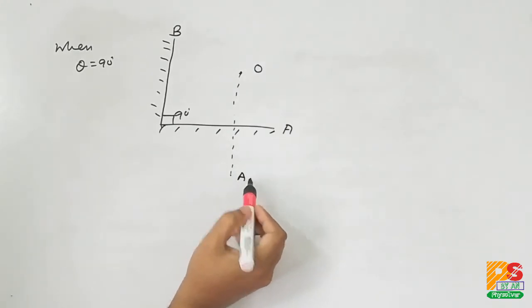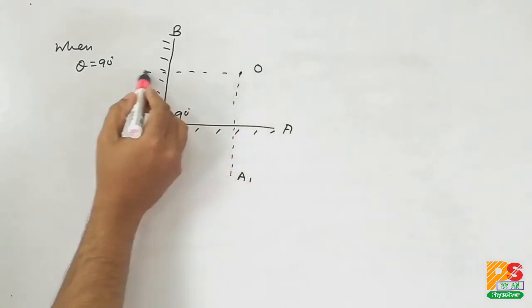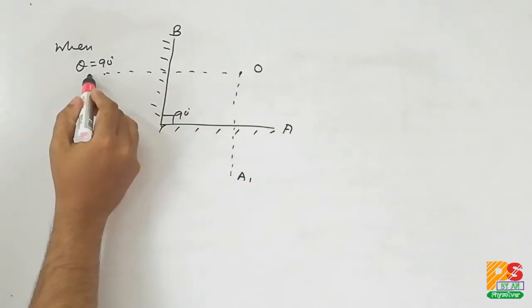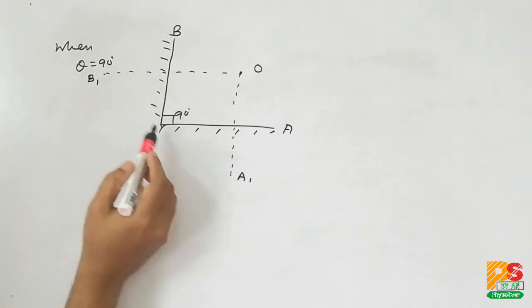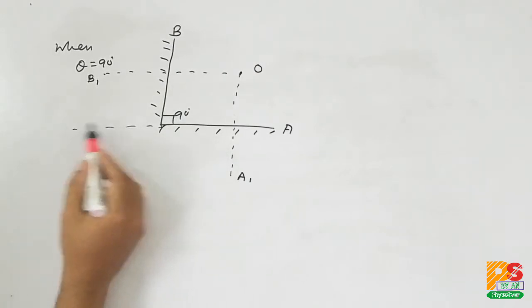Let's understand how the images are formed. The first image is formed directly behind mirror A, which is A1, and the second image is formed directly behind mirror B, which is B1.